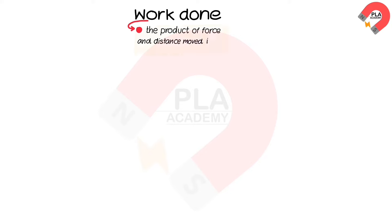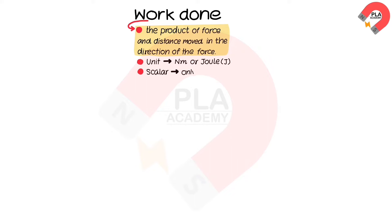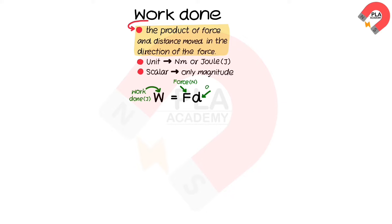Work done is the product of force and distance moved in the direction of the force. Its unit is either Newton-meter or Joules. Work is a scalar quantity, which has only magnitude. The equation for work done can be written as W = F × d, where W represents the work done in Joules, F is force in Newtons, and d is the distance moved in the direction of force in meters.